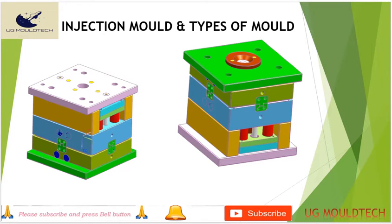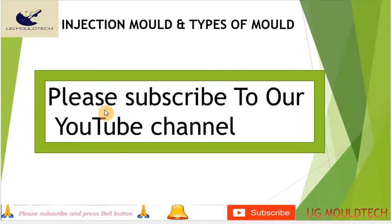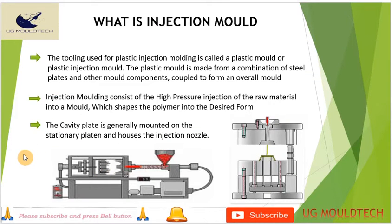Hello friends, welcome to our channel UG Mold Tech. Today we are going to learn about what is injection mold and what are the types of mold we have. Now we start — what is injection molding? Injection molding consists of a high pressure injection of raw material into the mold, which shapes the polymer into the desired form.